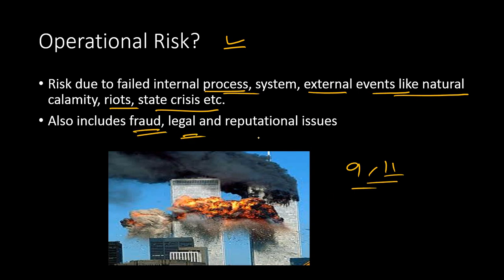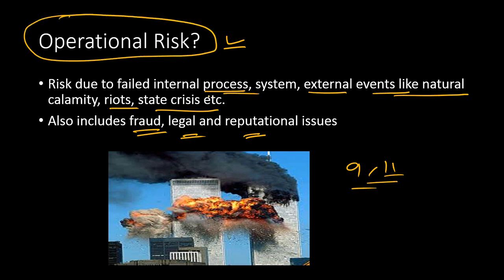There could be other operational risks such as fraud, legal issues, or reputational damage — for example, when an employee is involved in fraudulent or criminal activities. This can affect the bank's reputation so much that people lose trust, withdraw money, and stop using the bank. Anything related to the banking process — internal or external — including IT system failures, can be classified as operational risk.